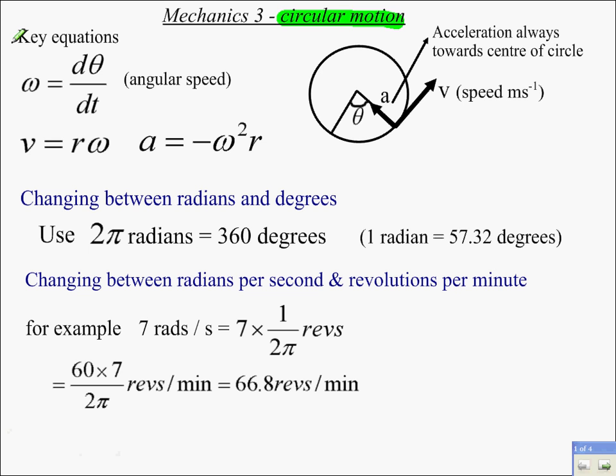This is part one where we'll look at only horizontal circular motion. Key equations you need to know: the angular speed, omega, is the rate of change of the angle with respect to time. The linear speed, V, is the radius of a circle multiplied by omega. And the acceleration, which is always towards the centre of the circle, is minus omega squared R.